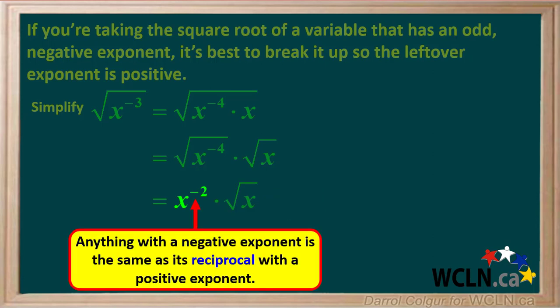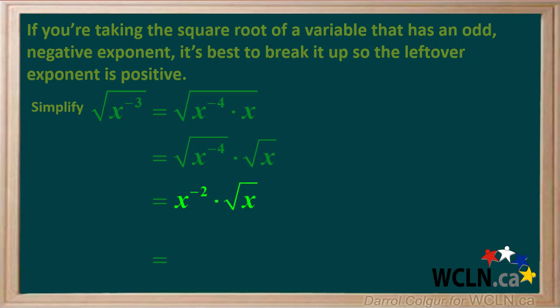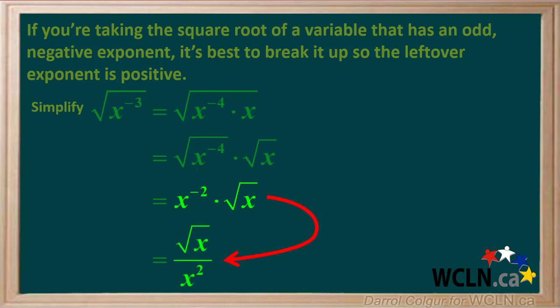Remember, any number or variable with a negative exponent is the same as its reciprocal with a positive exponent. So x to the negative 2 times the square root of x is the same as the square root of x over x squared. So now we can state that the square root of x to the negative 3 is equal to the square root of x over x squared.